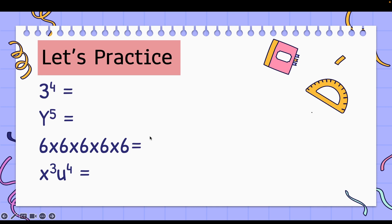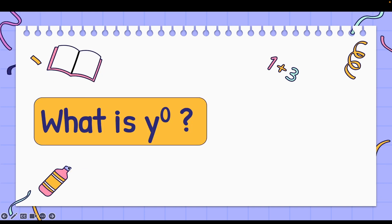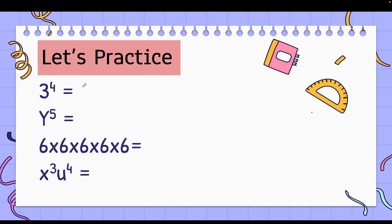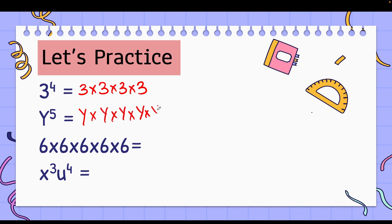Let's practice before we move forward. What does 3 to the power 4 mean? It is 3 × 3 × 3 × 3. What about y to the power 5? Yes, it applies to variables too — y multiplied with y, 5 times. And what is 6 × 6 × 6 × 6 × 6? Since 6 is multiplied 5 times, that is 6 to the power 5. The exponent tells you how many times the base is multiplied.